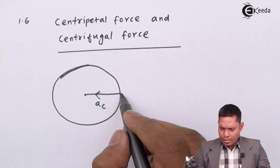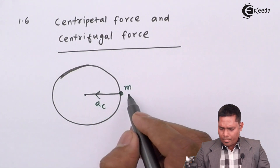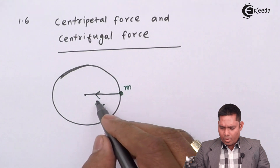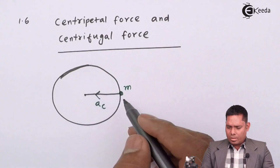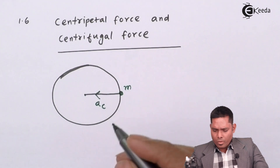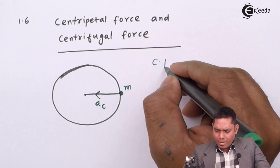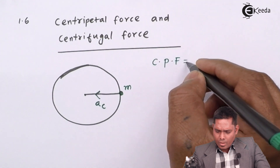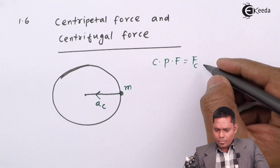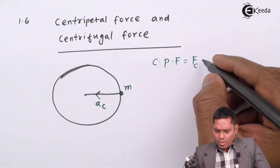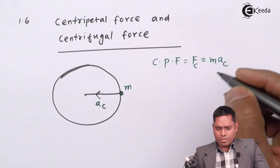And for a body having mass M, multiplied by the centripetal acceleration gives the centripetal force. So centripetal force Fc is mass times centripetal acceleration.